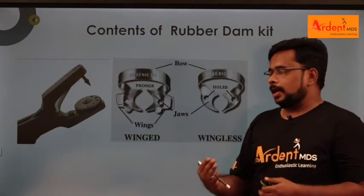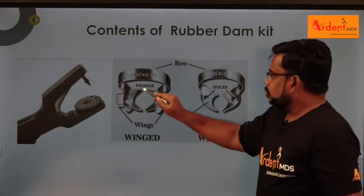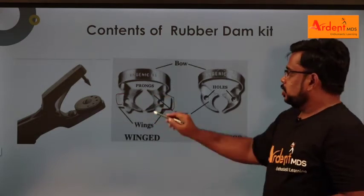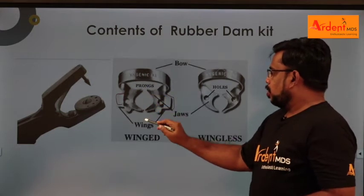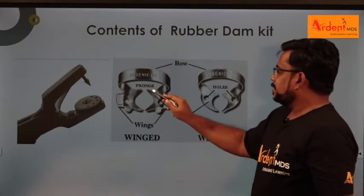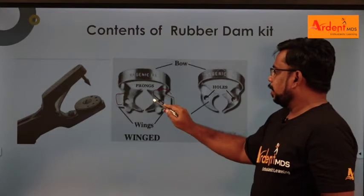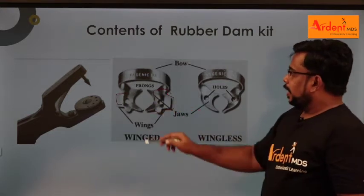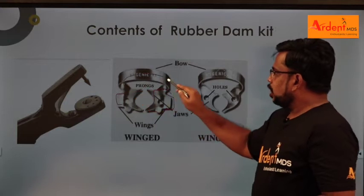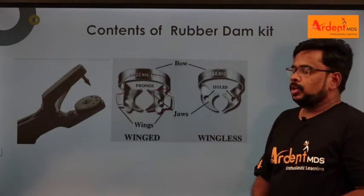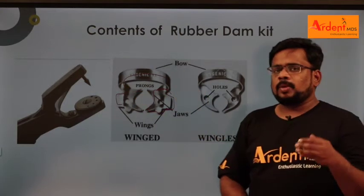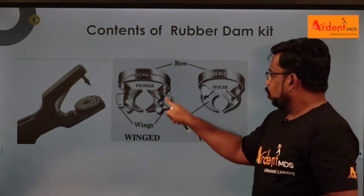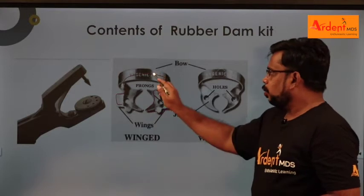There are disadvantages with the winged rubber dam - placing wedges and matrix bands is very difficult. The parts of the rubber dam clamp are: the sharp projections called prongs (there are four prongs), the extension from the prongs called jaws, and the area connecting the two jaws called the bow. So the parts of the rubber dam clamp are four prongs, two jaws, and one bow.